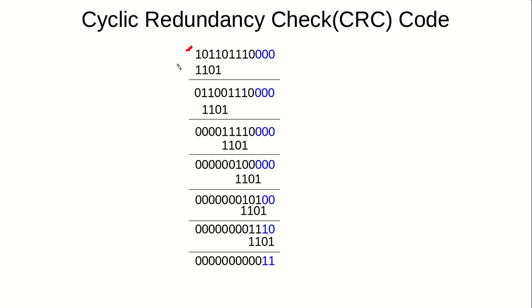This is the data with three zeros appended, and this is the generator polynomial. The first thing we do is search for the first one in the data. We then perform four consecutive bitwise XOR operations with the polynomial. For example: 1 XOR 1 is 0, 0 XOR 1 is 1, 1 XOR 0 is 1, and 1 XOR 1 is 0. The remaining portion stays the same.